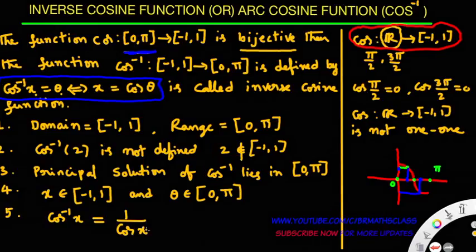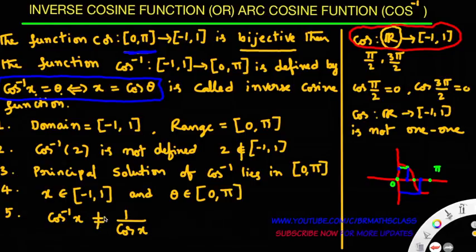Fifth point: there is a chance that students will confuse cos inverse x with 1 divided by cos x. Actually, both are not the same — they are different. Cos inverse x is different; 1 by cos x is different. I hope you understand this class.